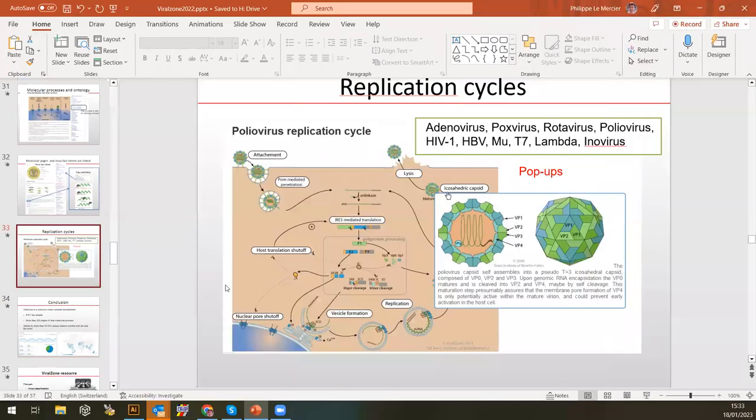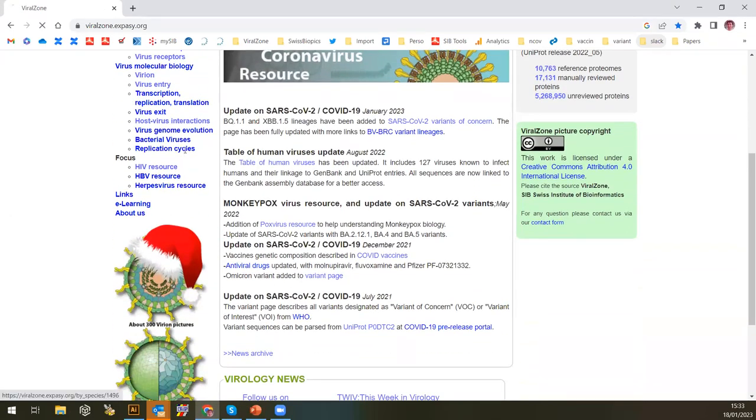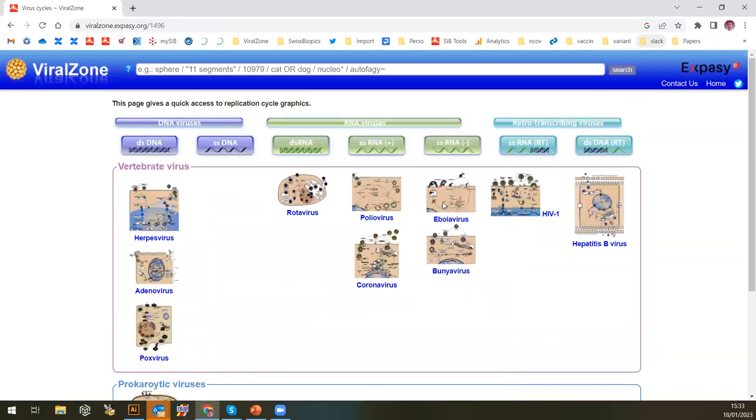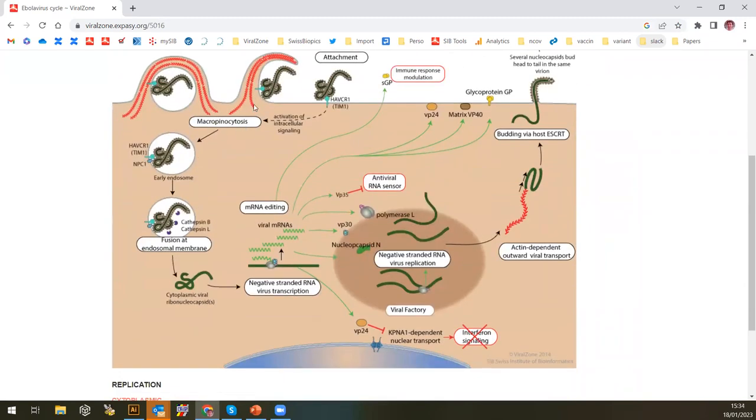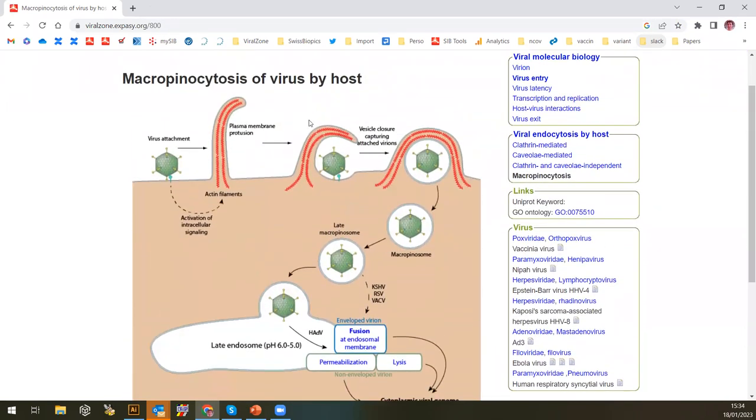We also have some replication cycles. I can show you that live—it will be more interesting. Replication cycle is about putting all this process together into one picture. For example, if we take Ebola virus, you get Ebola virus is a big particle. It's mainly entering by micropinocytosis. So you see the replication cycle is a little bit interactive, so you can click on it and see more detailed explanation of what is micropinocytosis for viruses. There are also some links to databases. Like if there is a keyword in UniProt about this process, you can access all the proteins and entries that are related to it. So all the viral proteins that would do this process would be involved in it. Also in gene ontology, a lot of links to go back and forth.